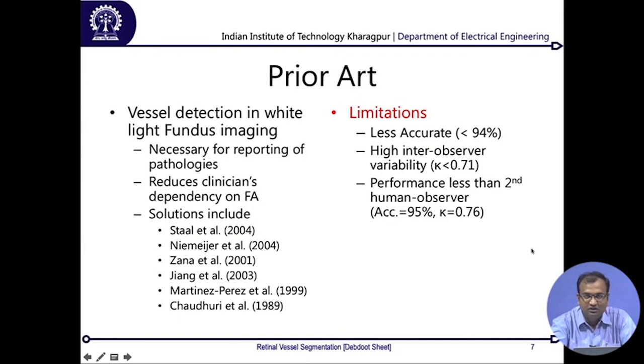Now that you know about the datasets, the next thing is knowing about what has happened in the past — the prior art. Vessel detection in white light fundus imaging is necessary primarily for the referencing of different pathologies. Whenever an ophthalmologist reports a particular pathological manifestation on a fundus image, he or she reports it with respect to anatomical locations or landmarks, which are often denoted with respect to vascular branching or where the vessels are — that is what acts as ground referencing.